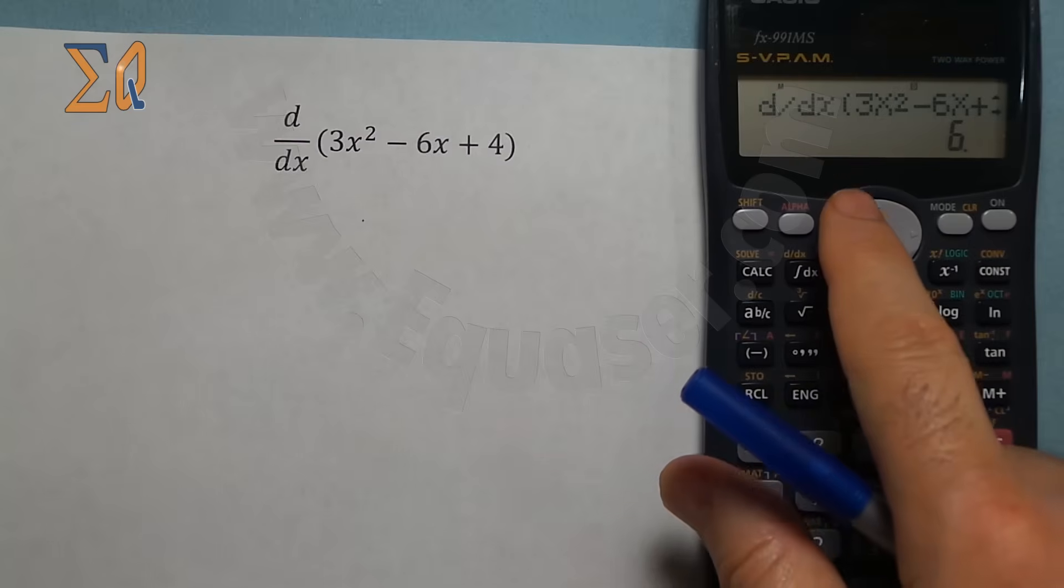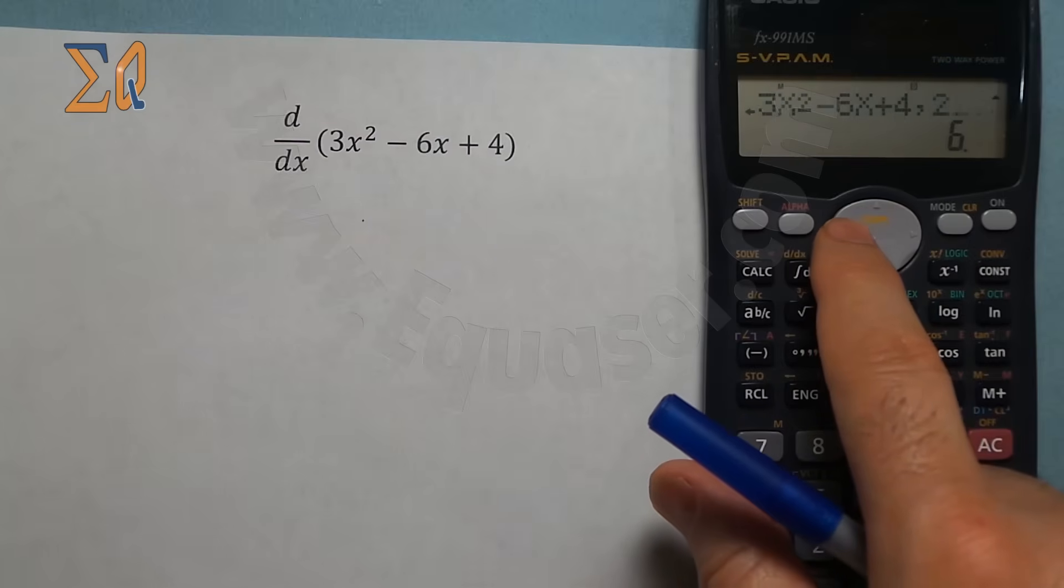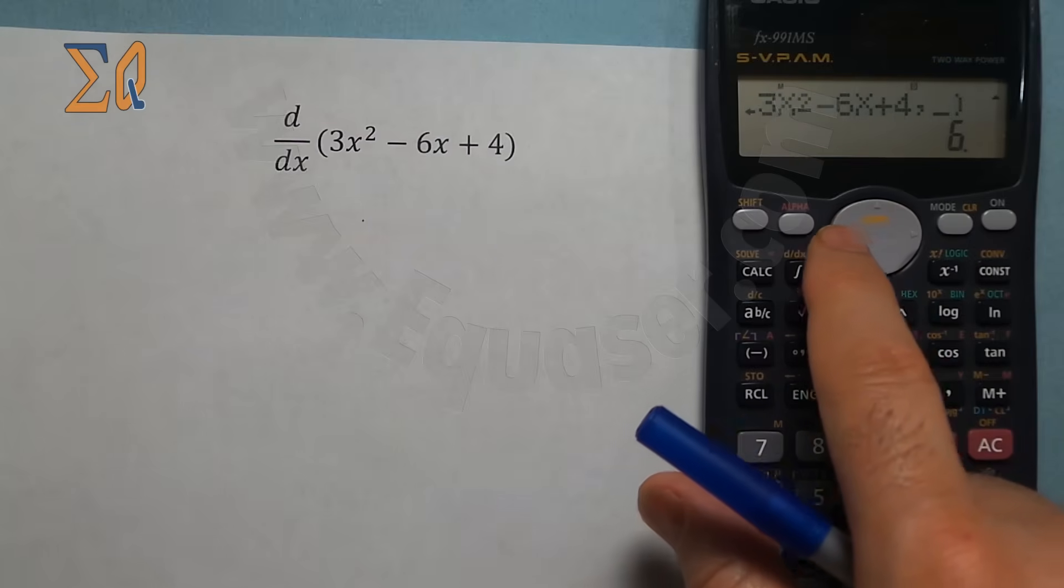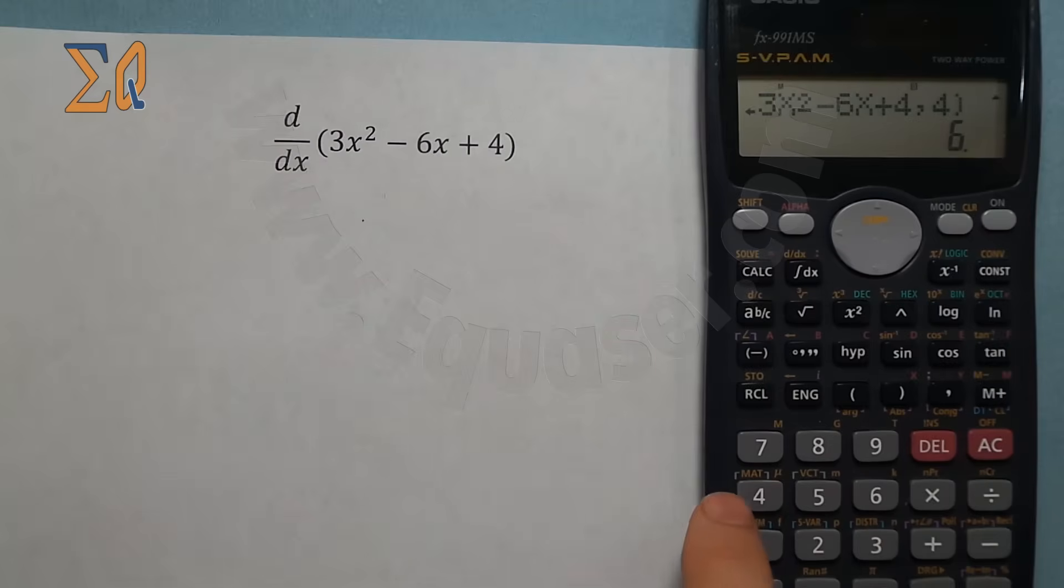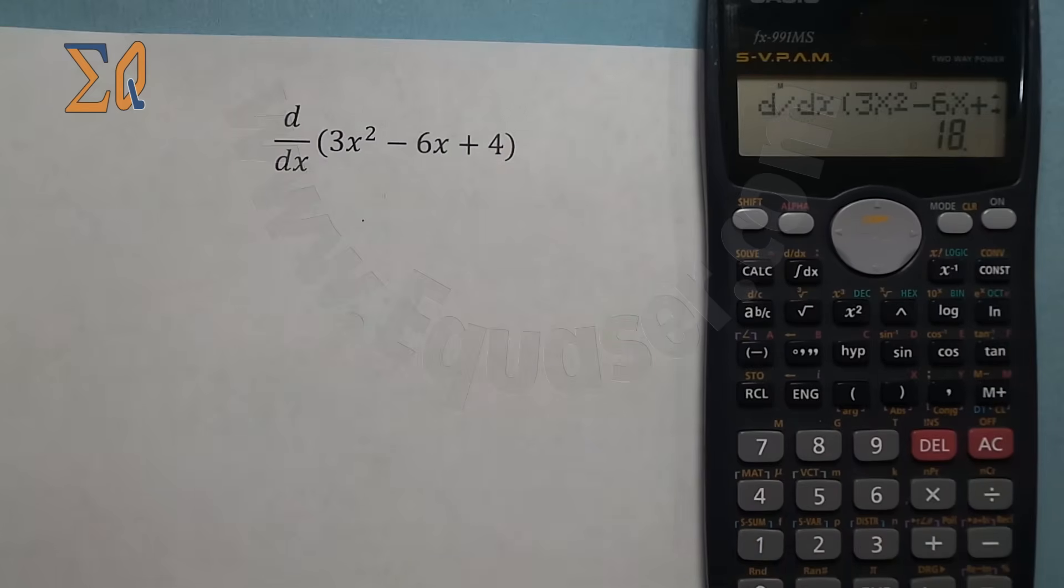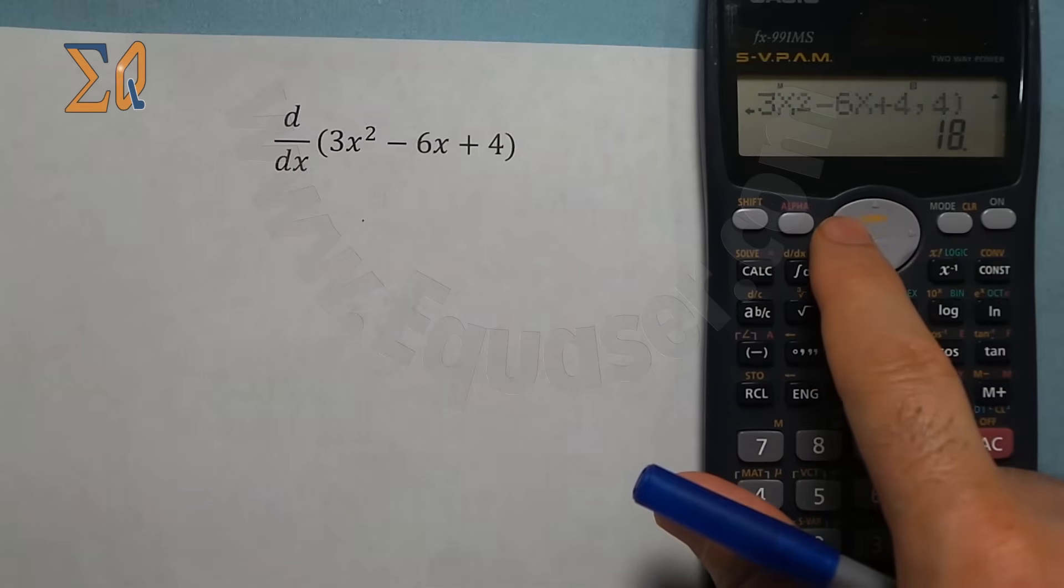Now if you want to evaluate another value, just press left arrow and change this to 4. That is very simple - do this as many times as you wish.